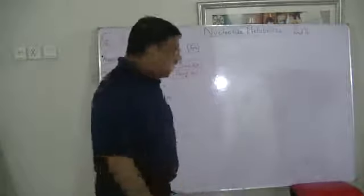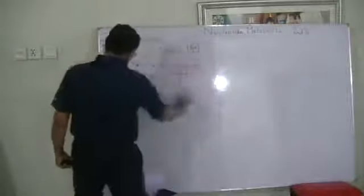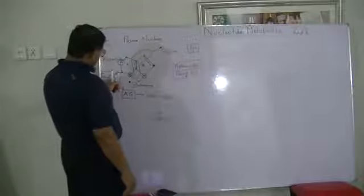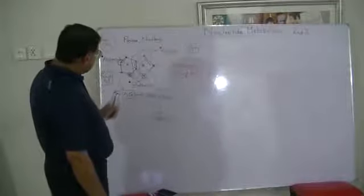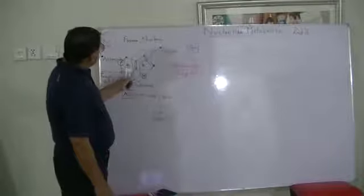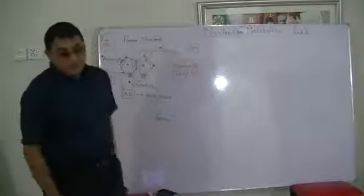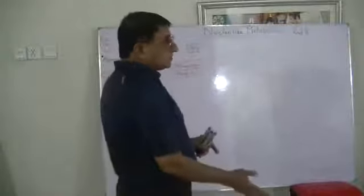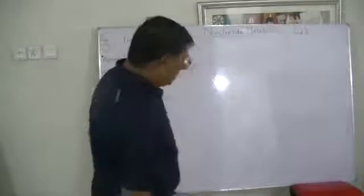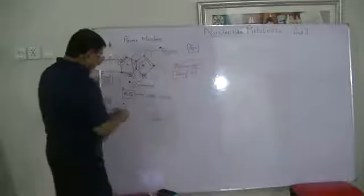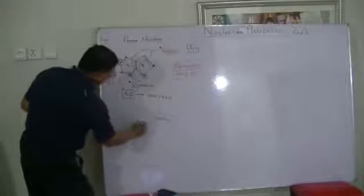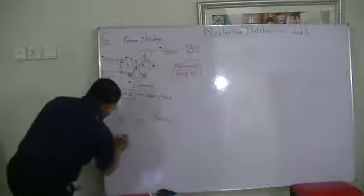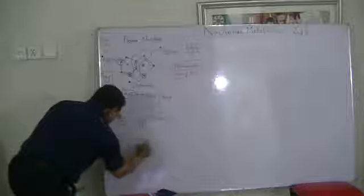Adenine and guanine are the purines. They are formed by the purine nucleus as described. Adenine has an amino group, and guanine also has an amino group. Now, adenine and guanine combine with the pyrimidines: adenine with thymine, and guanine with cytosine.